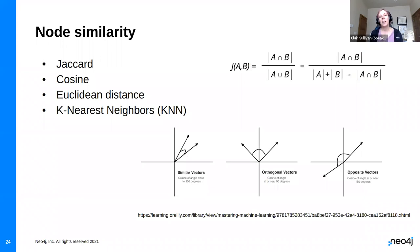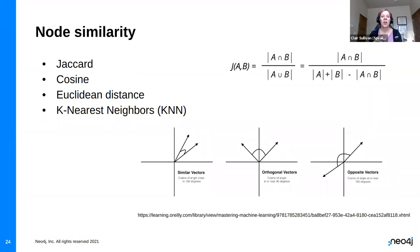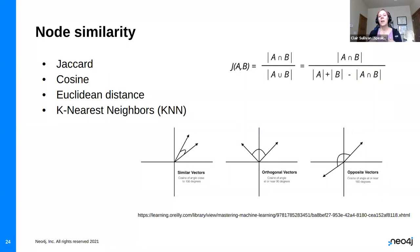Node similarity typically requires turning nodes into vectors. We can look at Jaccard similarity — how many nodes do two nodes have in common — as well as cosine similarity, Euclidean distance, and K-nearest neighbors, particularly in an unsupervised context. All of that is possible within a graph.